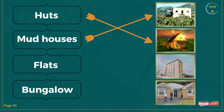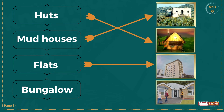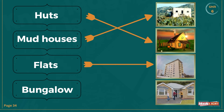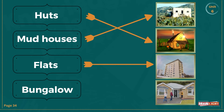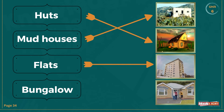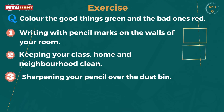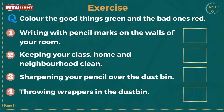Number three is flats — students, this is a picture of flats. And the last one is bungalow — students, can you tell me which one is the bungalow? Very good! This is the picture of bungalow — match it with its corresponding picture.